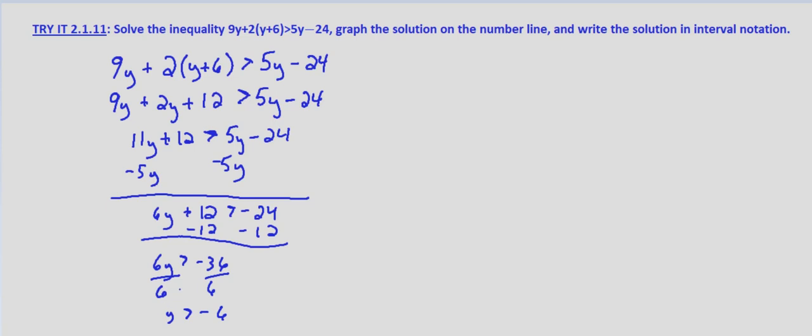Now notice that we didn't change the direction of the inequality symbol. The reason for that is because we didn't divide or multiply both sides by a negative value. We divided both sides by 6 which is positive.